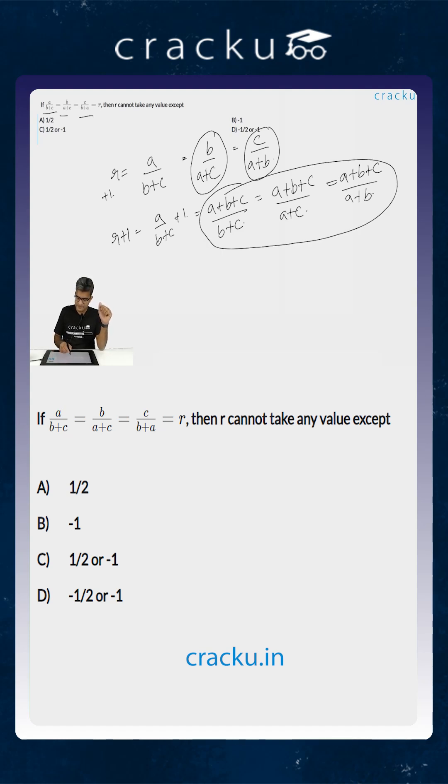All of them are the same. If all of them are the same, either a plus b plus c is equal to 0, which is the numerator,